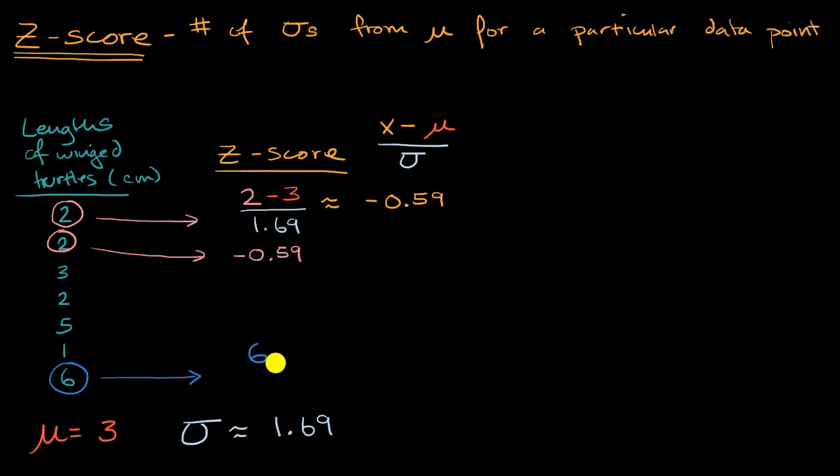Well, it's going to be six minus our mean. So minus three. All of that over the standard deviation. All of that over one point six nine. And this, if you have a calculator, and I calculated it ahead of time, this is going to be approximately one point seven seven.